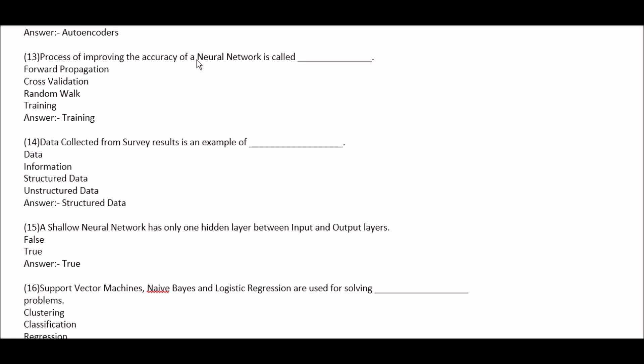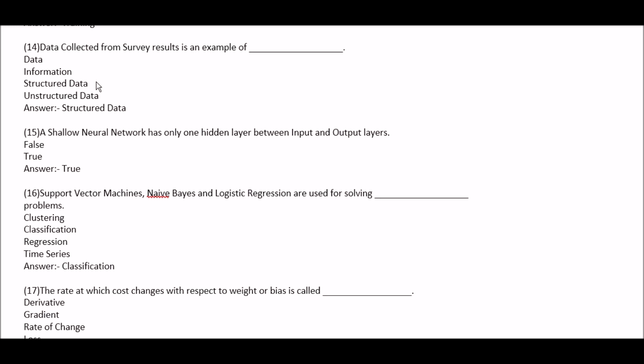Process of improving the accuracy of a neural network is called — option A: forward propagation. Option B: cross validation. Option C: random block. Option D: training. Right answer is option D, training. Next question: data collected from survey results is an example of — option A: data. Option B: information. Option C: structured data. Option D: unstructured data. Right answer is structured data — data collected from survey results is an example of structured data.